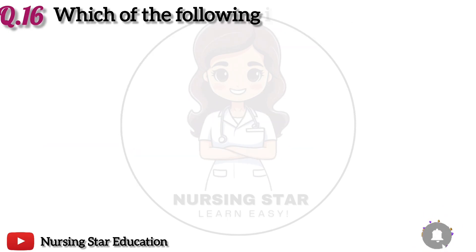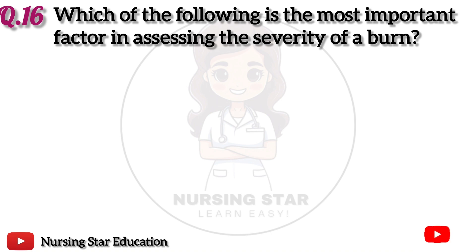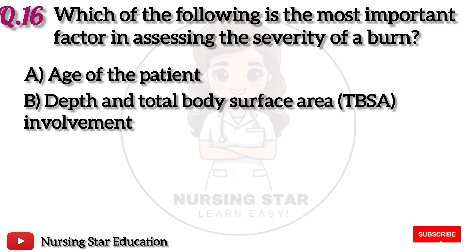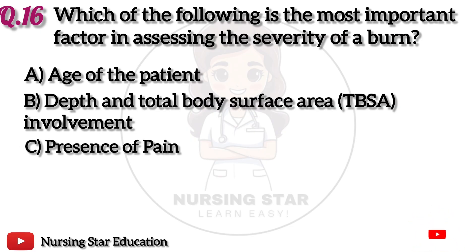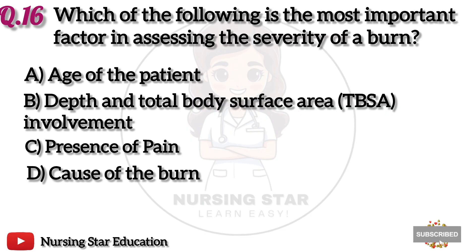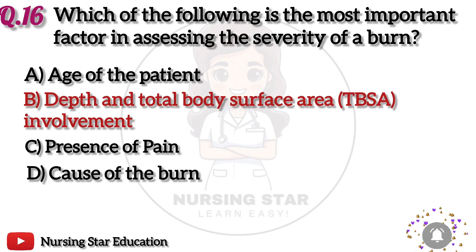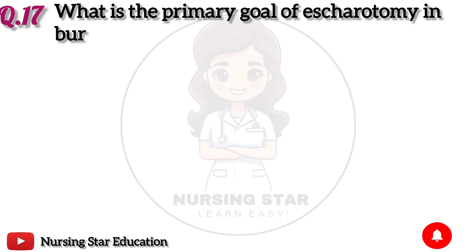Question 16: Which of the following is the most important factor in assessing the severity of a burn? Option A: Age of the patient. B: Depth and total body surface area (TBSA) involvement. C: Presence of pain. D: Cause of the burn. The correct answer is B: Depth and total body surface area (TBSA) involvement.